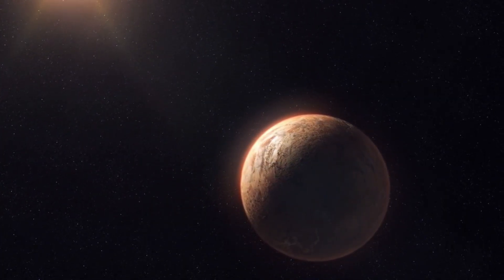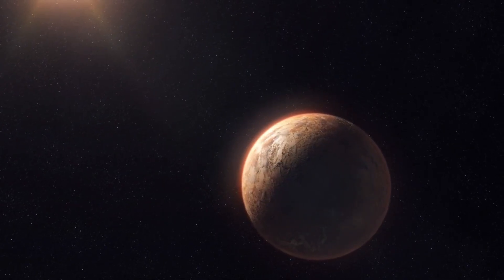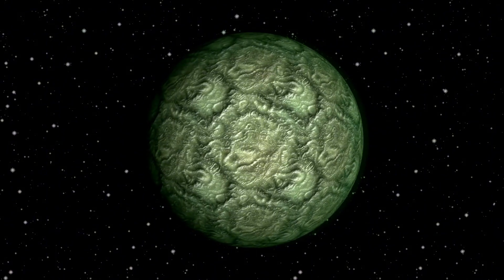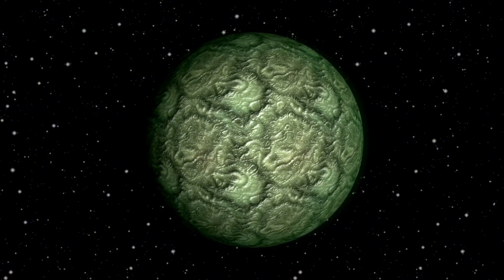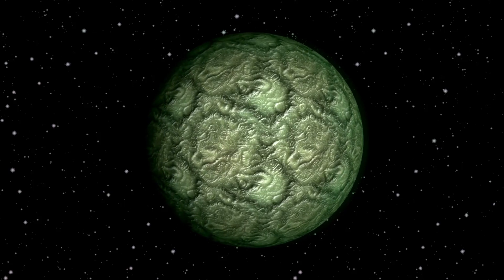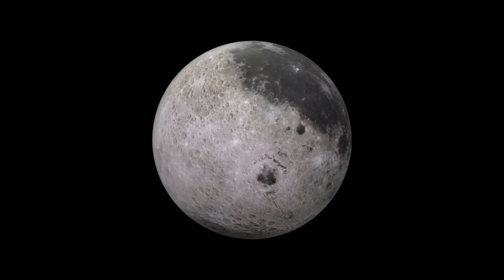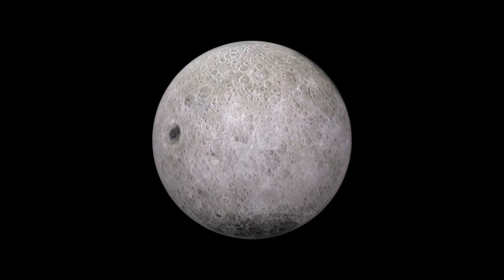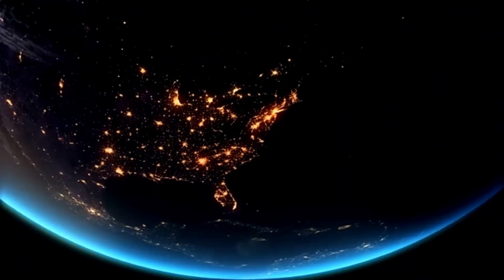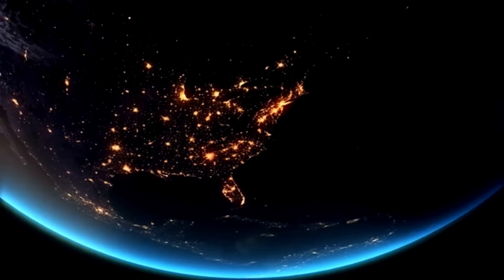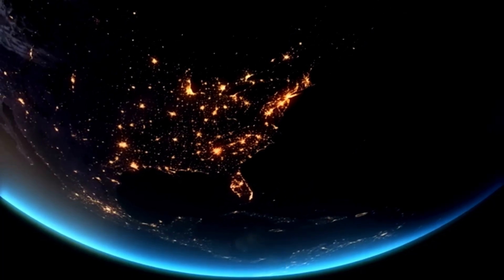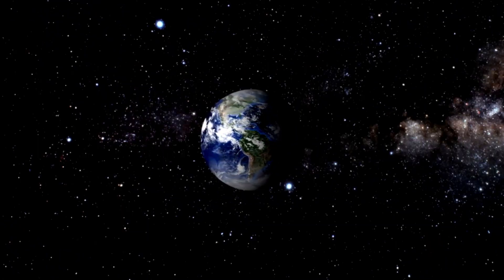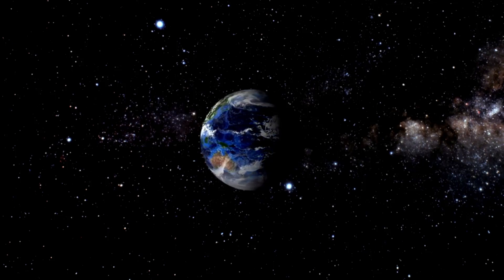The New Horizons mission uncovered fascinating aspects of the climate and seasonal changes on this planet. Pluto, which orbits in the cold, far-off regions of the Kuiper belt, experiences dramatic seasonal variations due to its unusual orbit and tilt. The New Horizons spacecraft found that Pluto's atmosphere, a thin layer of nitrogen, methane, and carbon monoxide, changes significantly depending on how close or far Pluto is from the sun. These changes influence the climate and surface conditions of the dwarf planet.